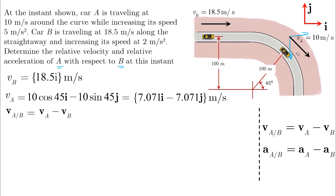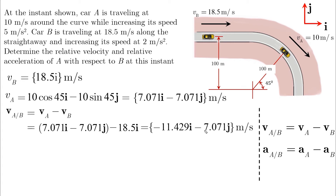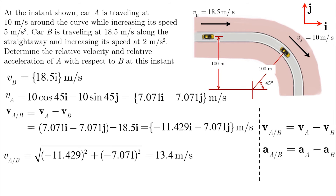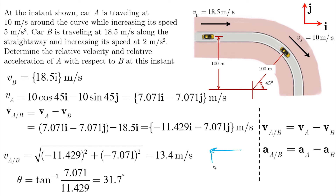If we subtract V_A from V_B, we get two components, both in the negative direction. The magnitude is 13.4, and the direction will be negative I with negative J, giving us this correct triangle.